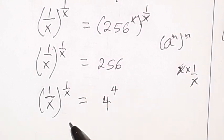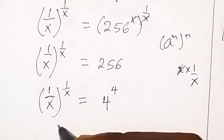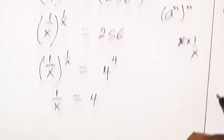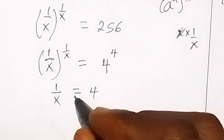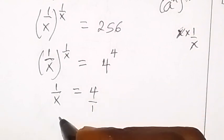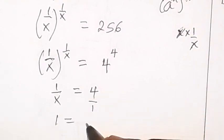Same base with same power, so we can equate the numbers and we have 1 over x equals to 4. And by the time we find our x from here, we can see 1 over 1, and let's cross multiply and we have 1 equals to 4x.